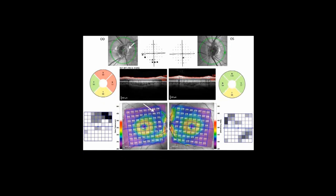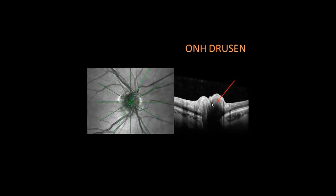Here is another glaucoma suspect with an inferior arcuate scotoma and an unusual nasal loss. There is a loss of nerve fiber layer, but there was something we were not confident about until we took an optic nerve scan. We could have easily labeled this as glaucoma — inferior arcuate scotoma, superior macular thickness abnormality, superior nerve fiber layer loss. But when we did scans through the optic nerve, we were able to pick up an optic nerve head drusen that was buried. You can see the homogeneous shadow caused by that drusen.